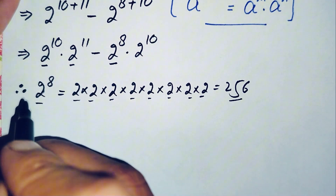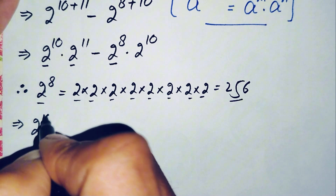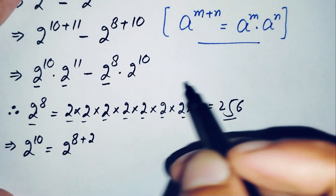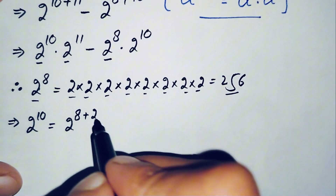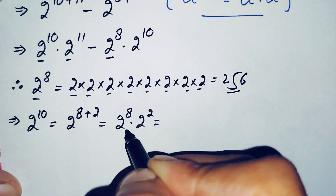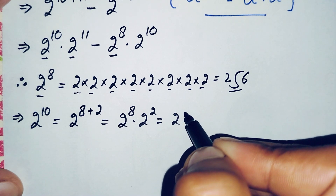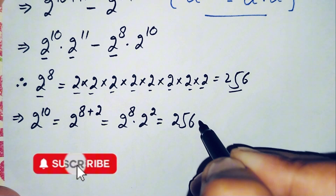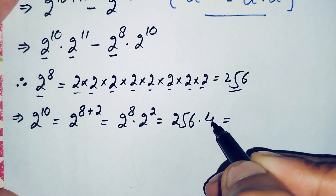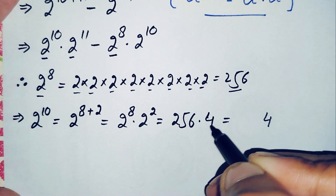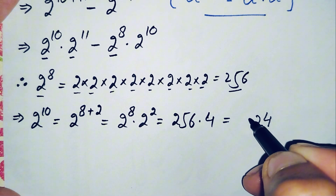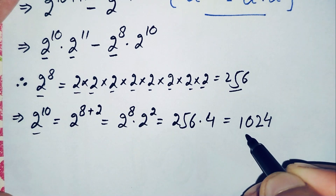Now to find the value of 2 raised to power 10, we write it as 2 raised to power 8 plus 2, which becomes 2 raised to power 8 times 2 raised to power 2. We have 2 raised to power 8 equals 256, and 2 raised to power 2 is 4. So 256 times 4: 4×6=24, carry 2; 4×5=20, plus 2 is 22, carry 2; 4×2=8, plus 2 is 10. So the value of 2 raised to power 10 is 1024.